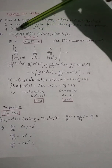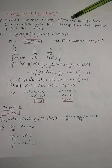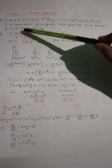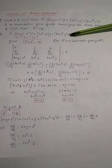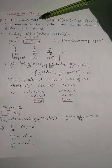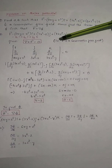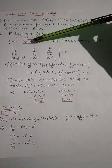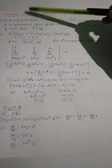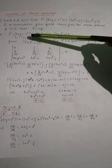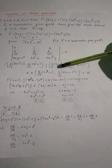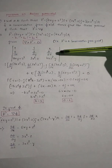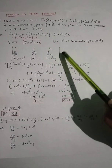Write vector F as (axy + z³)i + (3x² - z)j + (bxz² - y)k in the standard form F1·i + F2·j + F3·k. Since F is a conservative force field, the condition is curl F = 0, that is del cross F = 0. Write the formula for curl F as a determinant with i, j, k in the first row, ∂/∂x, ∂/∂y, ∂/∂z in the second row, and F1, F2, F3 in the third row, equated to zero.